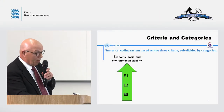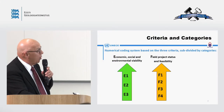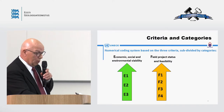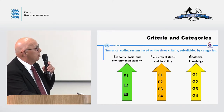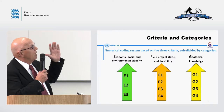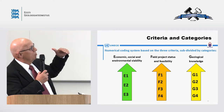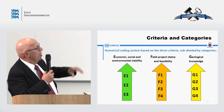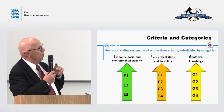The building blocks of the classification are the three criteria: economic, social, and environmental viability; field project status and feasibility; and geological knowledge. Each criterion is divided into categories — E1, E2, E3; F1, F2, F3, F4; and so on.